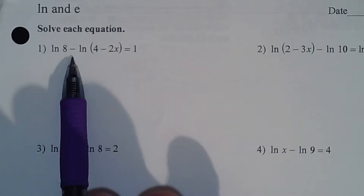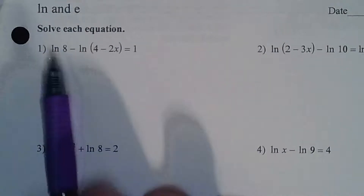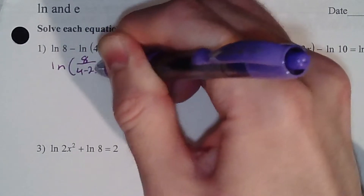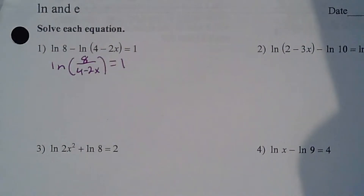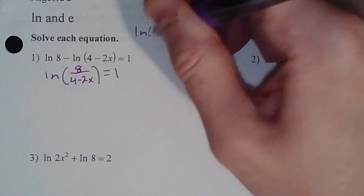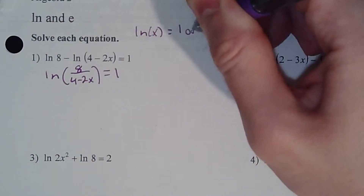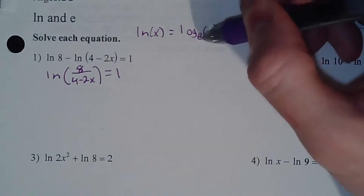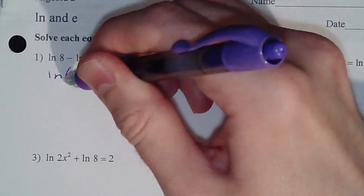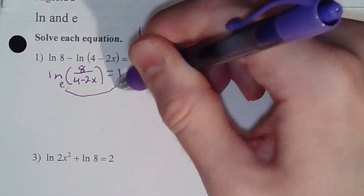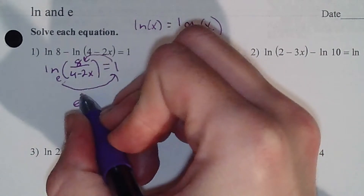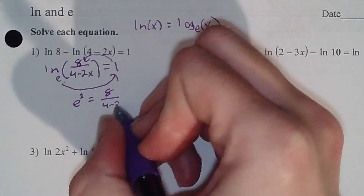First step: we recognize the minus sign in between — the negative sign means division. So my first step is to rewrite this as LN of 8 divided by (4 minus 2x) equals 1. After that, we have to remember that LN of x is the same thing as log base E of x. That's one of our key definitions. The main idea is there's an invisible E down there. So when I do my log loop, E raised to the first power is the inside — E to the power of 1 equals 8 over (4 minus 2x).